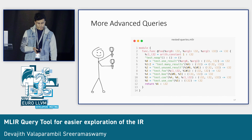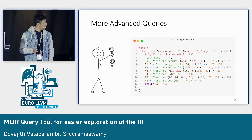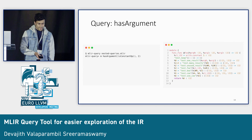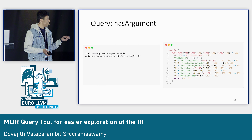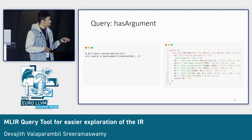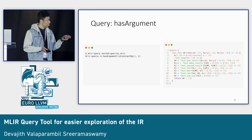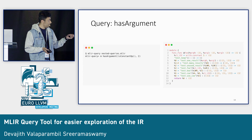Now let's move on to slightly more advanced queries. I'll be using a different MLIR file here: nestedQueries.mlir. The first query is hasArgument. To load this, you do mlir-query nestedQueries.mlir, which opens a REPL interface. Then here we have: match hasArgument(isConstantOp(), 2). What this means is it matches all the operations that have an argument which is the result of an isConstantOp at index 2.